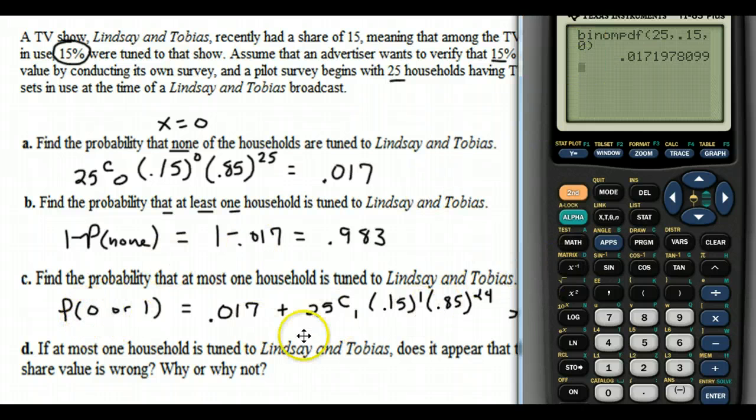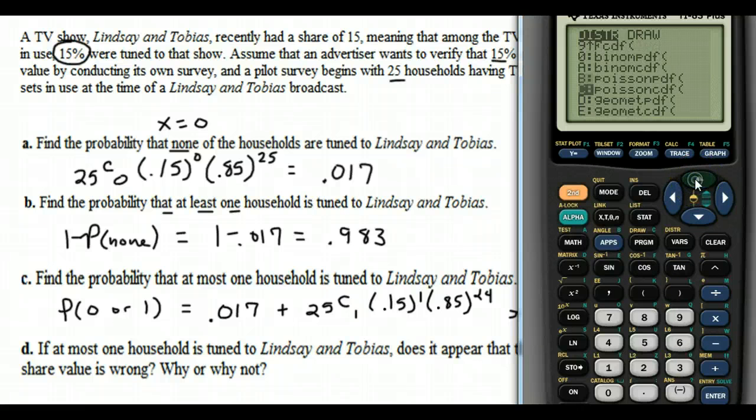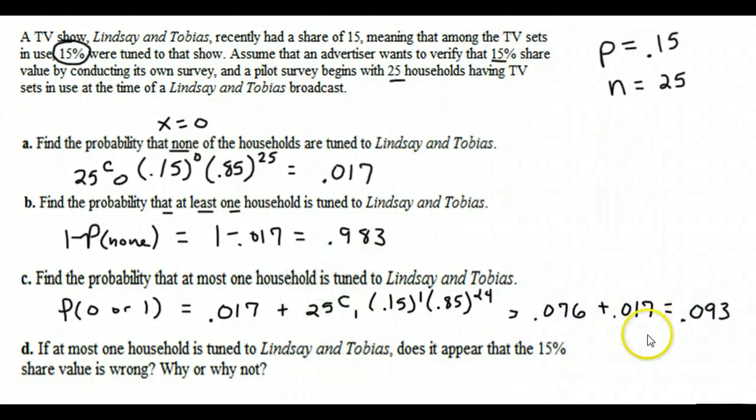And then this one for part C, when I did 0 or 1, I could do the probability of 0, and then or means add, and then do it again, binomial PDF, and then N is 25, P is 0.15, and then X is 1, and then I add, and I get 0.093, which is what I got right here, so you can do that with your calculator.